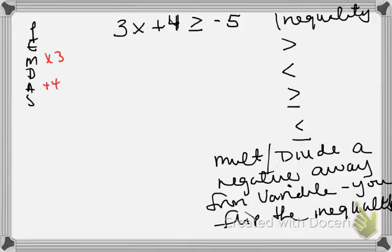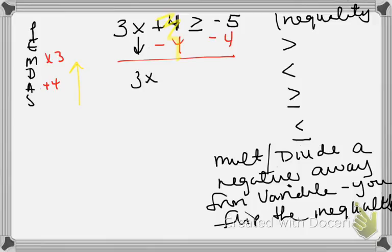So remember, we go in the opposite direction. It's being added by four, so I'm going to subtract four from both sides. This becomes my zero pair. I can bring down my 3X, and it's greater than or equal to. Are the signs the same or different? They're the same, so you add — so it's negative nine.